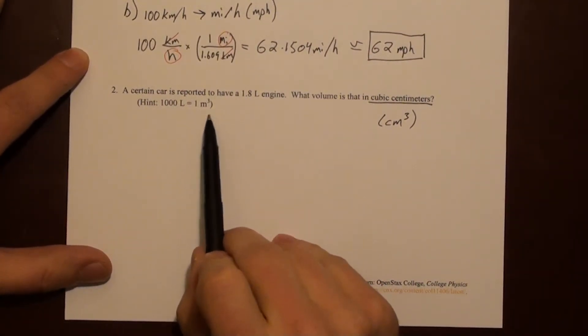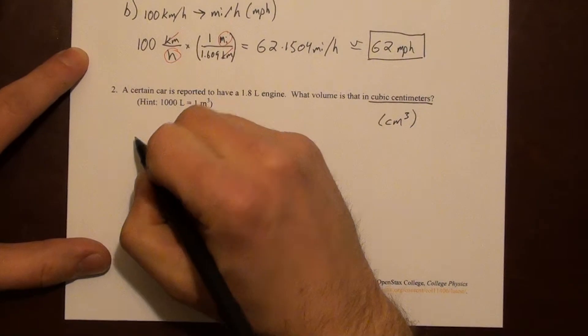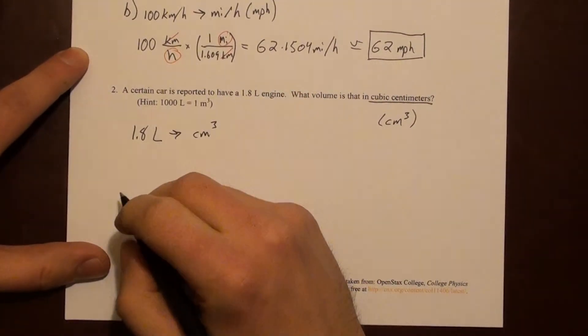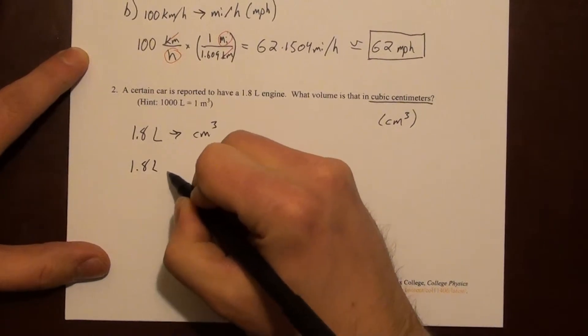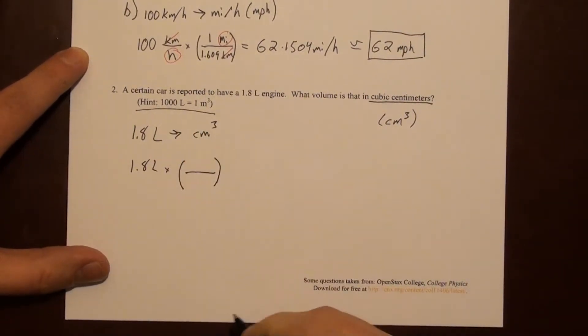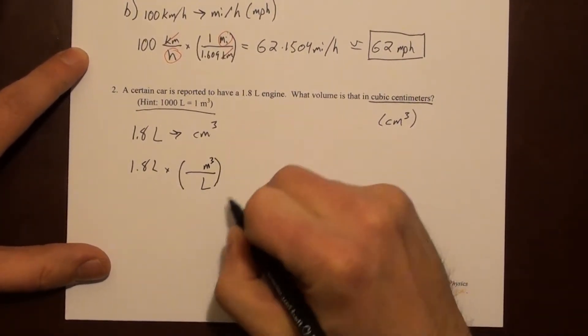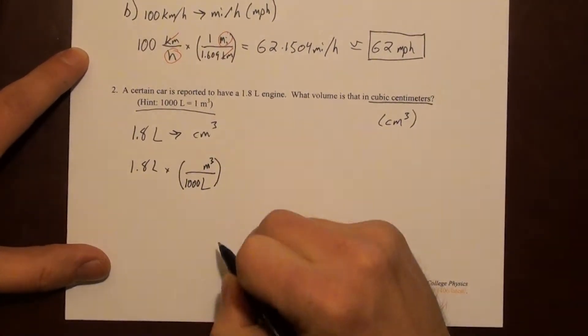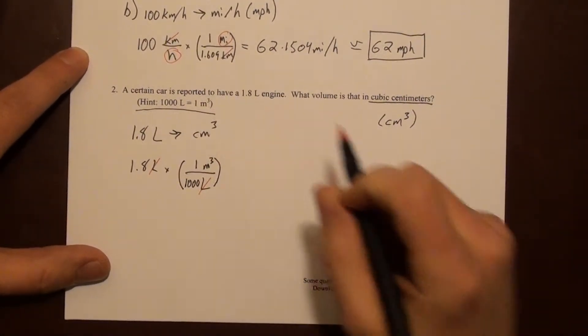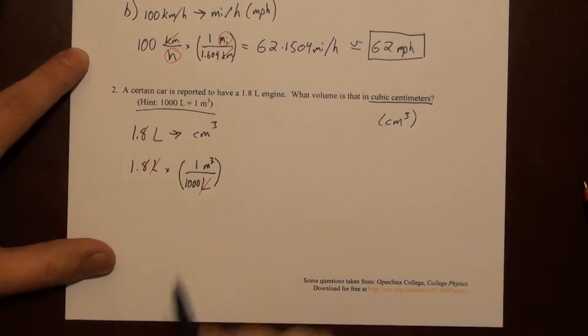This is given here because it's not on the table that I gave you on my courses. So we'll start by saying we want to go from 1.8 liters to cubic centimeters. So 1.8 liters times something. Well, we have this hint here. That's a good place to start. So liters on the bottom and cubic meters on top. And it says that there are a thousand liters per cubic meter. So looking at the units canceling here, puts us into cubic meters. And then we need to go from cubic meters to cubic centimeters.